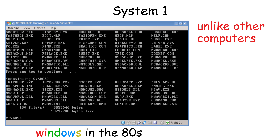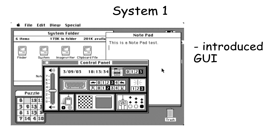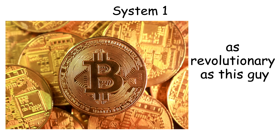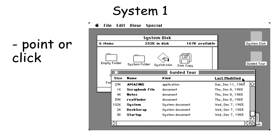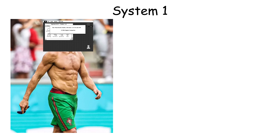Unlike other computers at that time that required typing complex commands, System 1 introduced a graphical user interface with icons, windows, and a mouse pointer. This made it revolutionary, because users could simply point and click instead of memorizing command prompts.